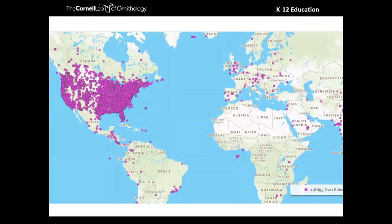Where does the data go? This is a snapshot of the map page on nestwatch.org showing over 118,000 nest sites recorded in the Nest Watch database. The vast majority are in North America, specifically the United States, but we have been expanding globally. We do focus North America on the resources we provide on the Nest Watch site, so there are really rich resources for finding and identifying nests.